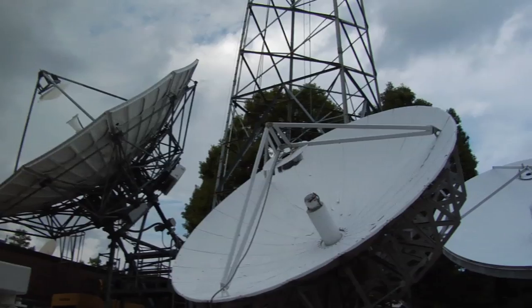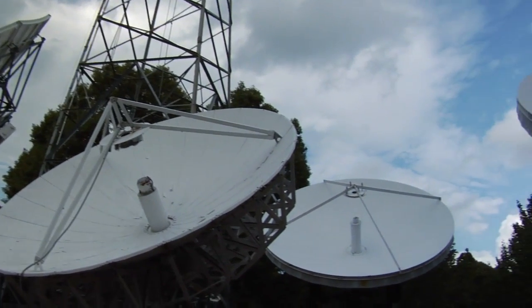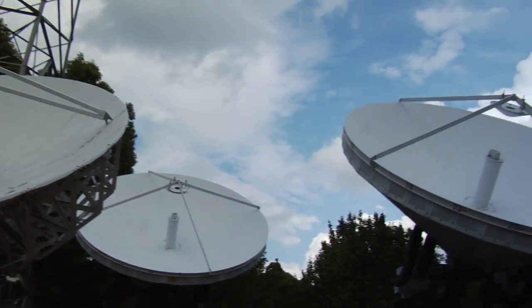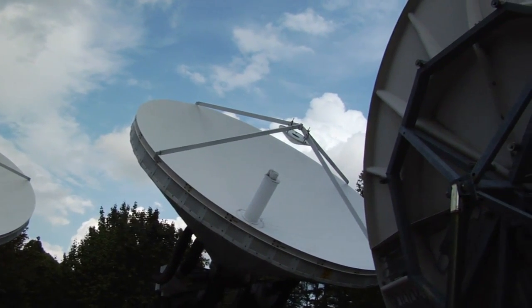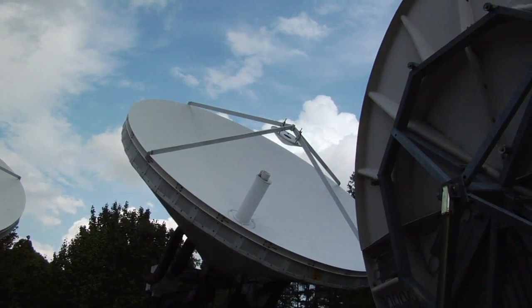Large uplink antennas at Microspace transmit signals to the satellite. Then a transponder aboard the satellite receives the signals and retransmits them back to Earth on a different frequency.